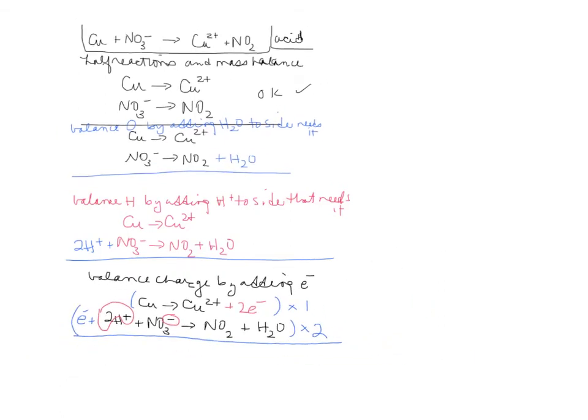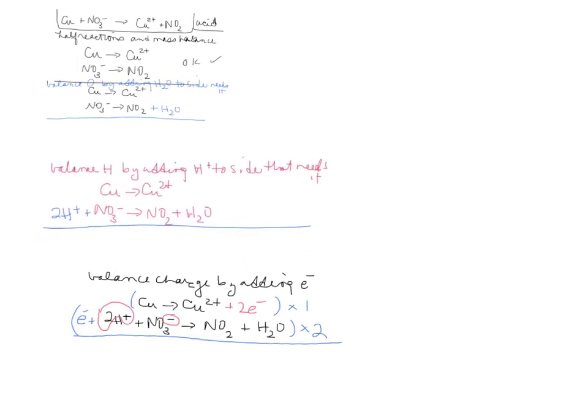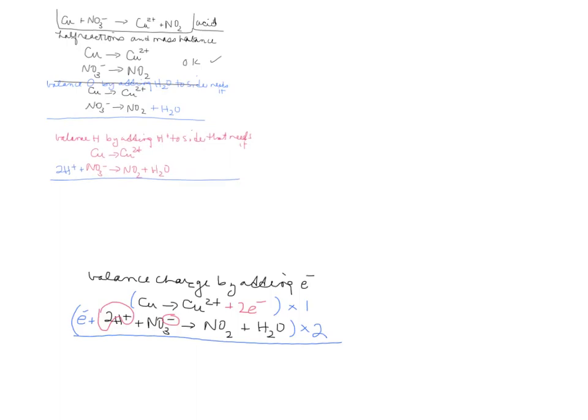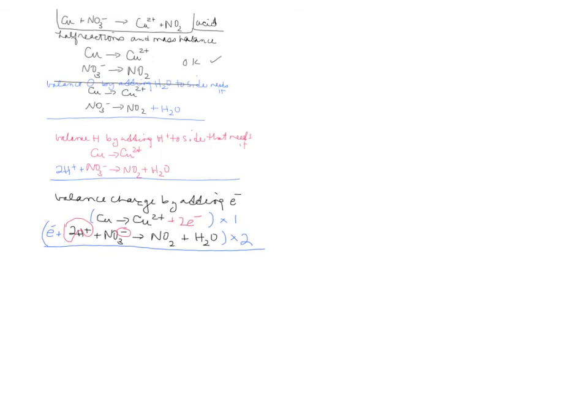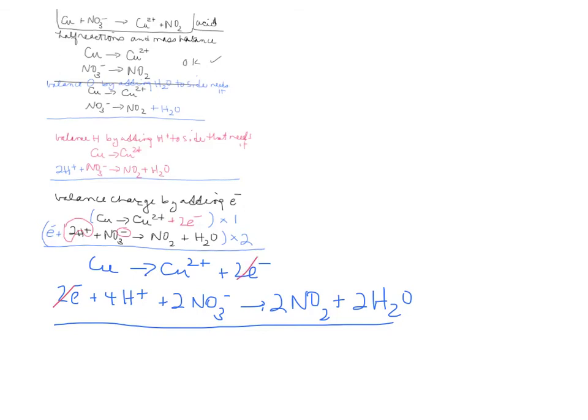All right, so now we're going to multiply and add. You've got copper forms copper 2 plus, plus 2 electrons, and then 2 electrons, plus 4H plus, plus 2 NO3 minus forms 2 NO2s, and 2H2O. Add them together, and the electrons cancel. So it'll be copper, plus 4H plus, plus 2 NO3 minus forms copper 2 plus, plus 2 NO2s, plus 2H2O. That should be it.